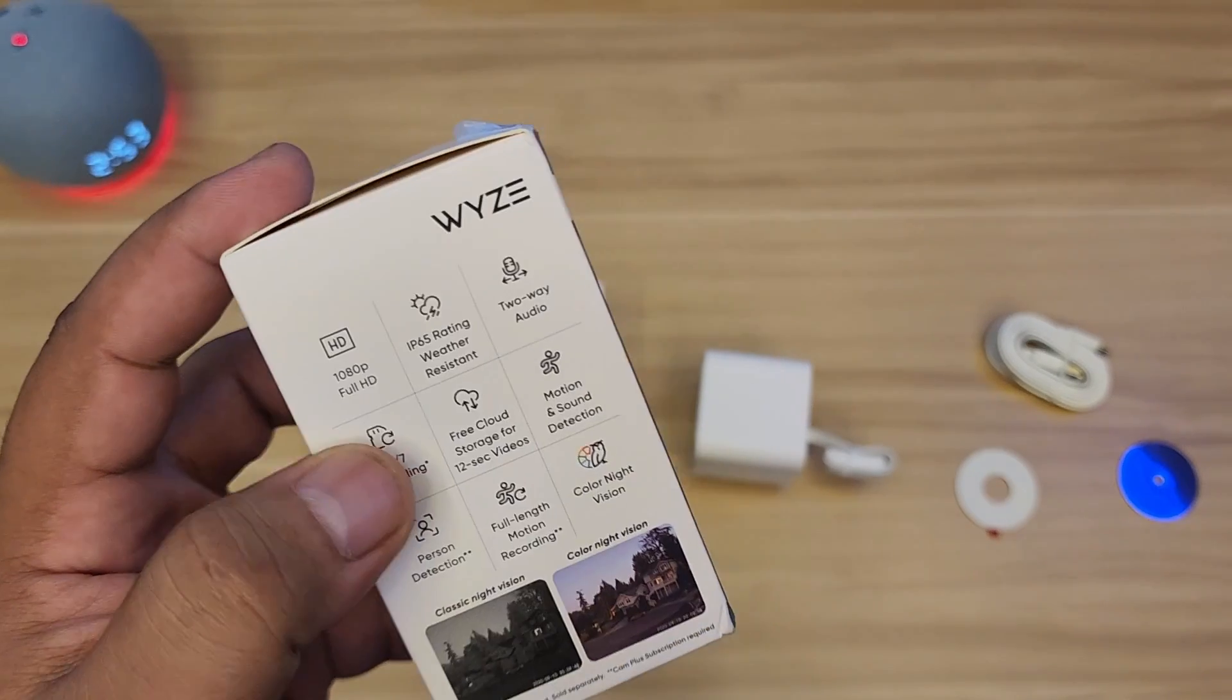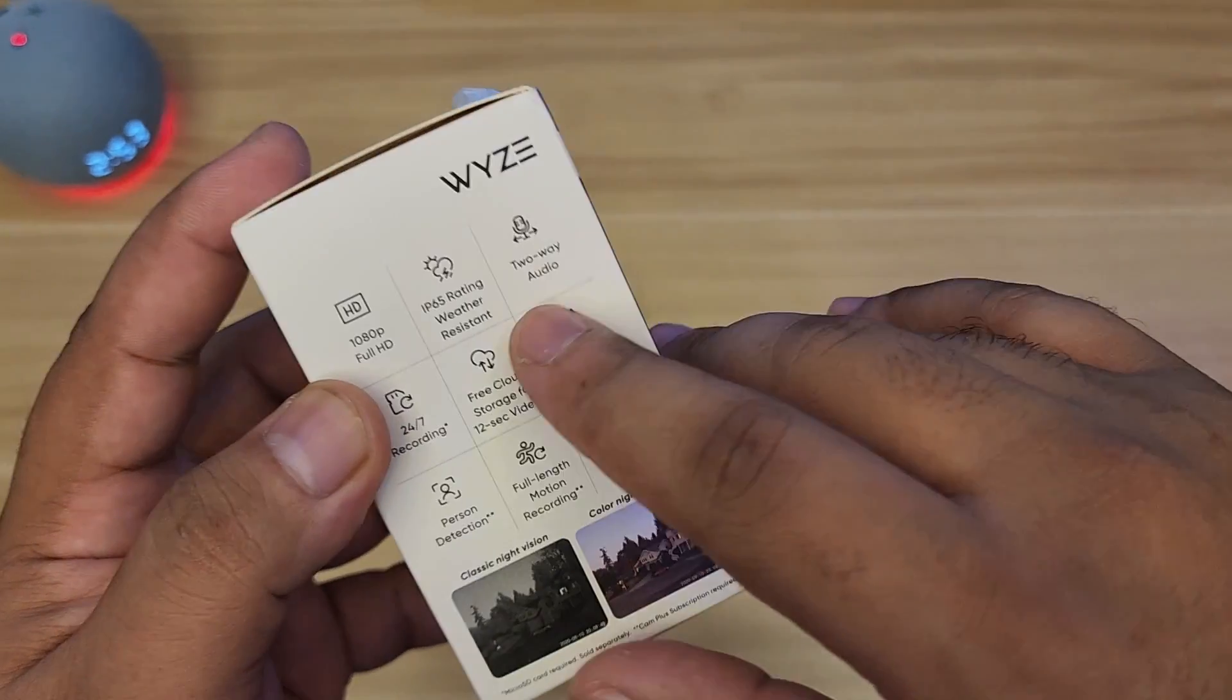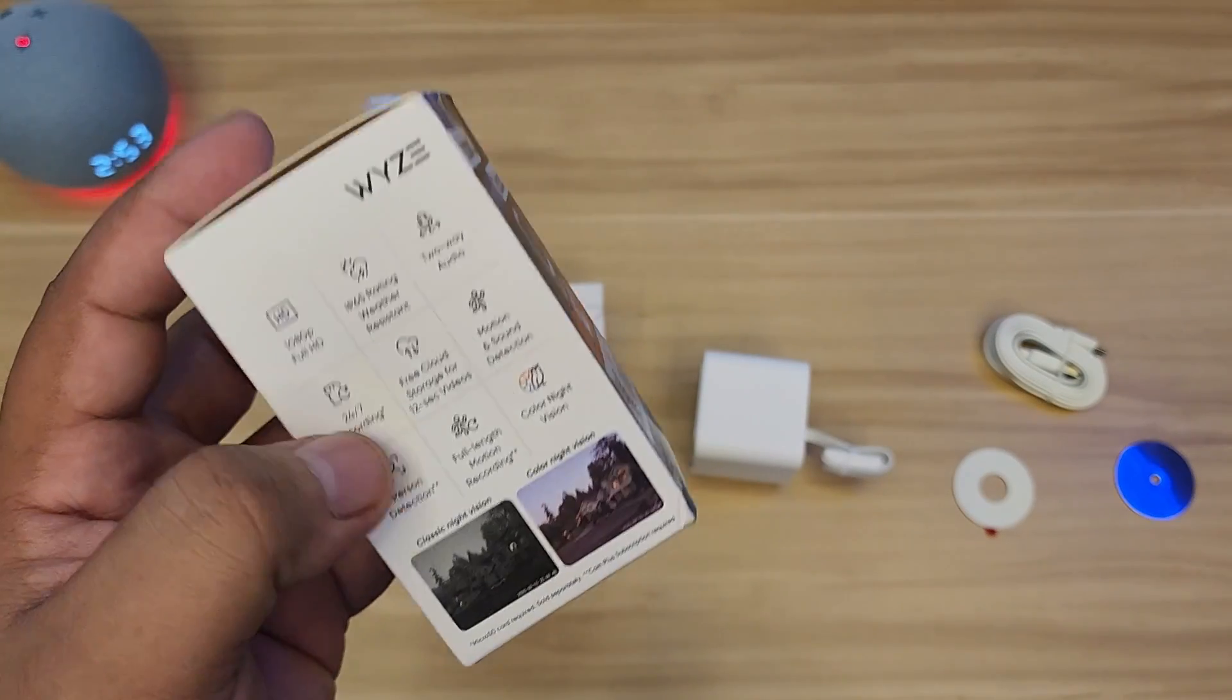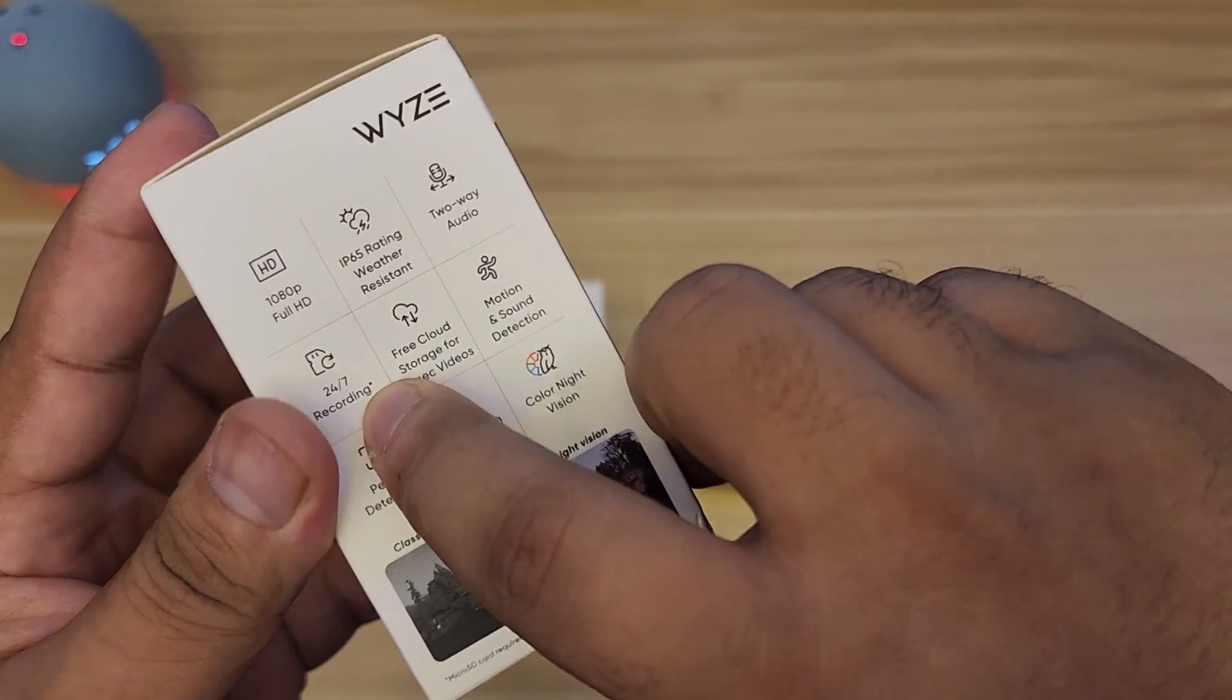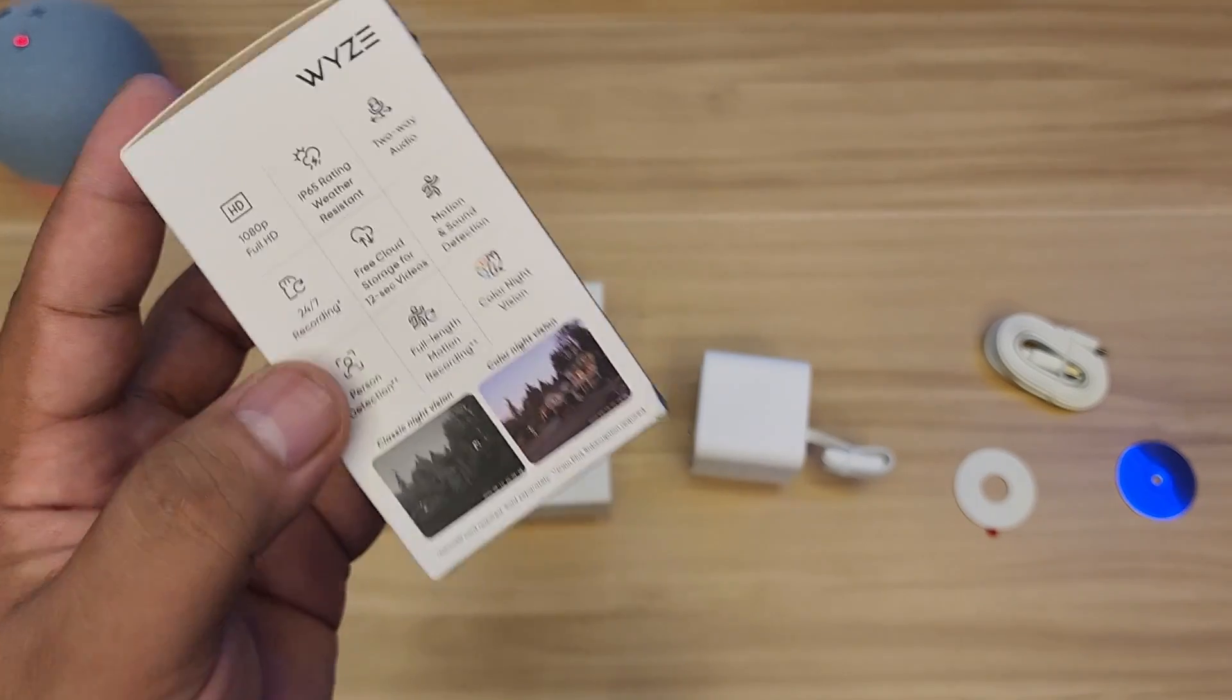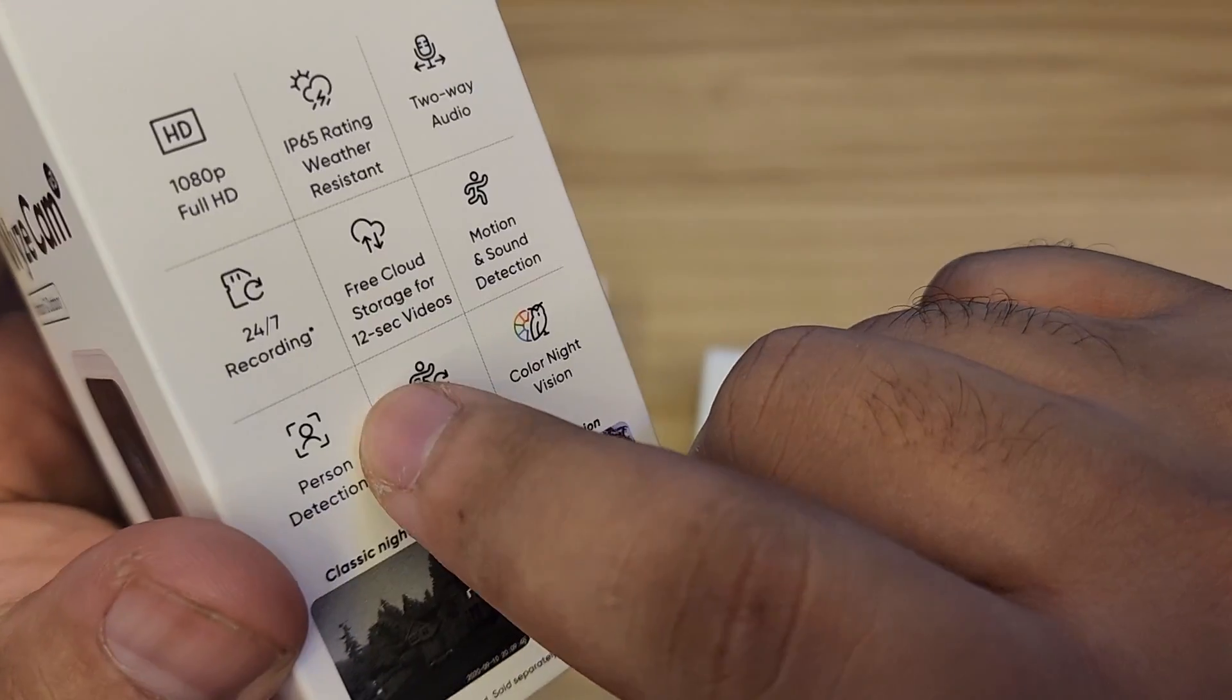It says 1080p Full HD capture, IP65 rating weather resistant, so snow and whatever weather you have. Two-way audio which is pretty cool, so you can talk to the delivery man. 24/7 recording - there's an asterisk there and that is available if you have the SD card. If not, it can use the cloud but will need some subscription.